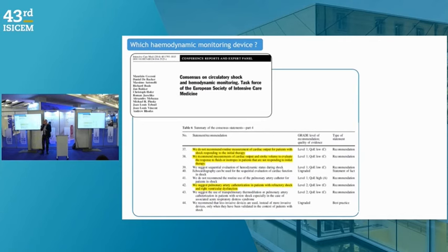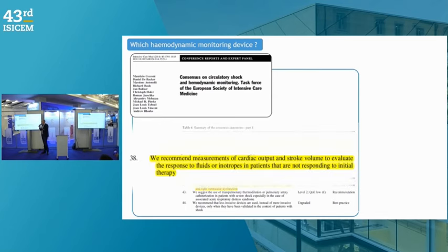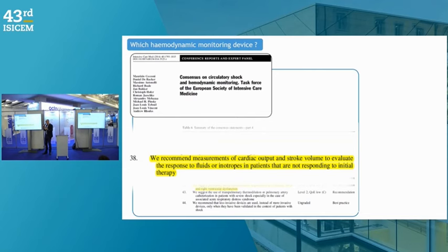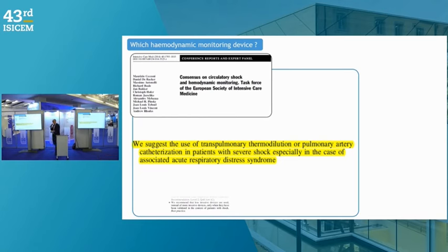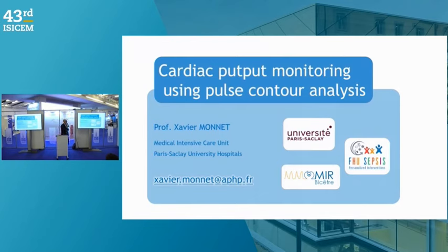The 2014 European Society consensus conference recommended monitoring cardiac output not in all patients, but in those who do not respond to initial therapy — the most severe patients where norepinephrine doses are being increased. The recommendation is to use either transpulmonary thermodilution calibrated systems or the pulmonary artery catheter. This consensus is being updated, and the update will be published in Intensive Care Medicine in coming weeks with quite similar recommendations.